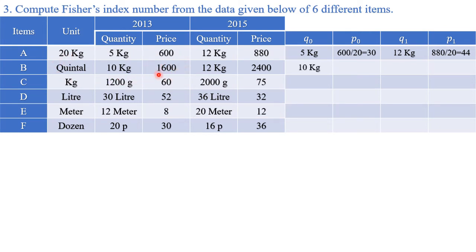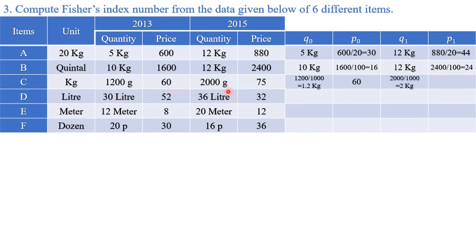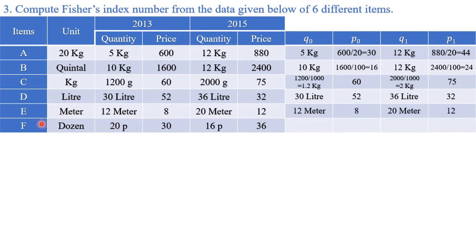Quintal is 100 kg: quantity 10 kg stays as is; price 1600 per quintal becomes 1600/100 = 16 rupees per kg; price 2400 per quintal becomes 2400/100 = 24 rupees per kg. For grams: 1200 grams converts to 1.2 kg, 2000 grams to 2 kg; prices stay as 75 rupees per kg. For liter and meter items, there is no unit difference, so values are written as they are.